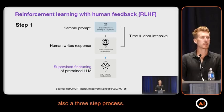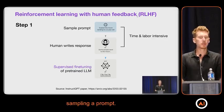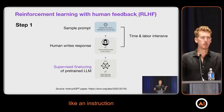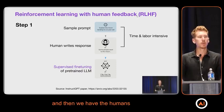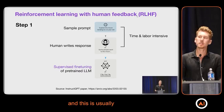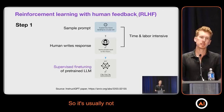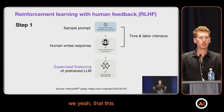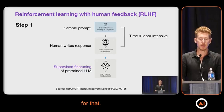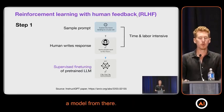So how this works is it's also a three-step process. First, we start with sampling a prompt — like an instruction. Then we have the humans writing the responses, so we are generating this data set. This is usually time and labor intensive because we have to have people to write these responses, but let's say we did this and we have a data set for that. We then do the supervised fine-tuning that I explained earlier and get a model from there.